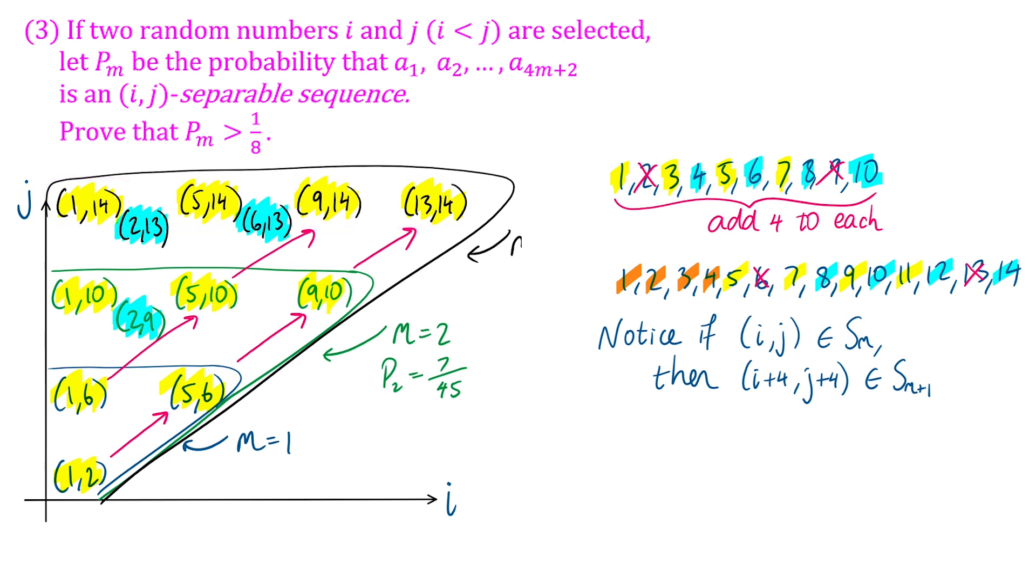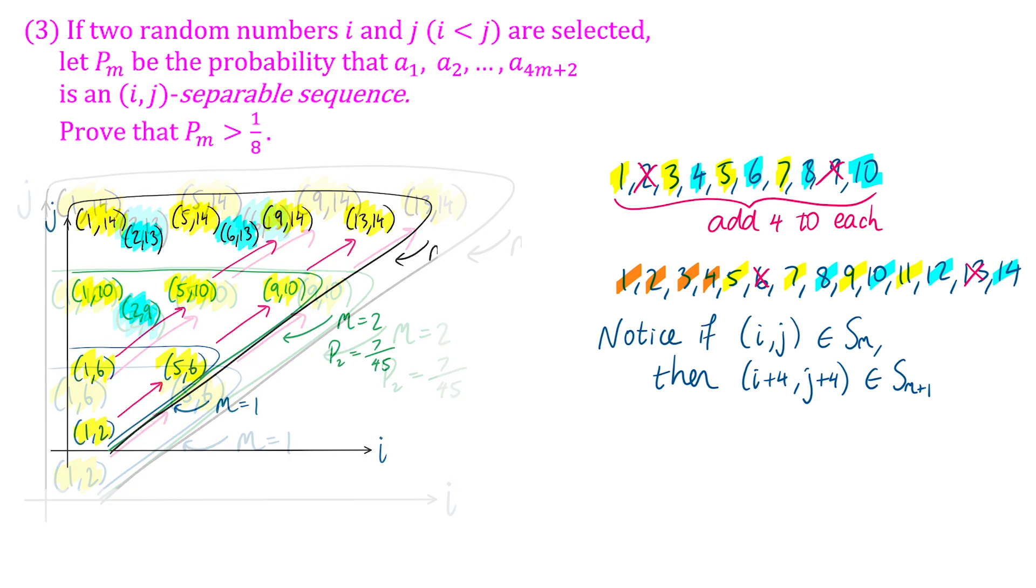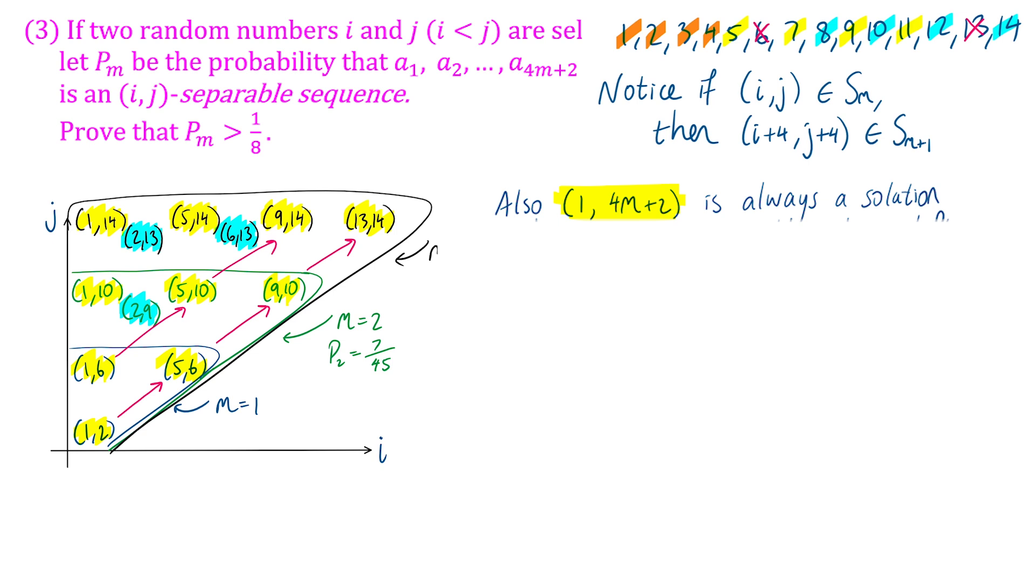But first, as far as a proof, we do need to say where does the leftmost solution in each case come from. For the yellow highlighted terms, like (1,10), (1,14), we're just taking the first and the last. So i = 1, j = 4m + 2, and then we'll have 4m consecutive integers in the middle, which we can split into m groups of four consecutive integers.